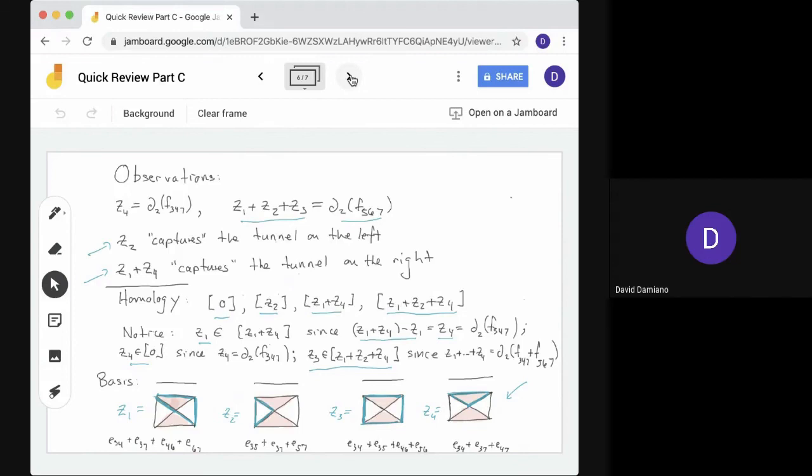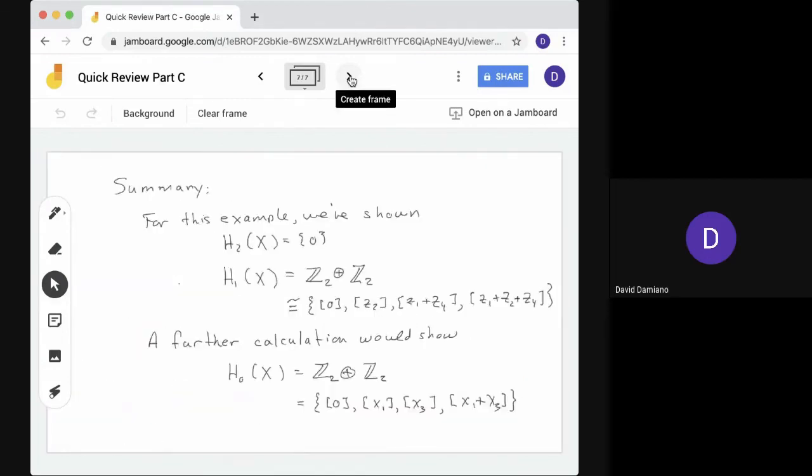And if we go on, what do we have? We have shown that H2 of X is 0. We've shown that H1 of X, which we just finished calculating, is Z2 direct sum Z2. What are the elements? The equivalence class of 0, Z2 of Z1 plus Z4 and Z1 plus Z2 plus Z4. We'll leave the rest, H0 to you. But if you were to do this calculation, you would also see that it's Z2 direct sum Z2. That's because we have two connected components. And the basis would be 0, X1, X3, X1 plus X3. And that finishes this session.